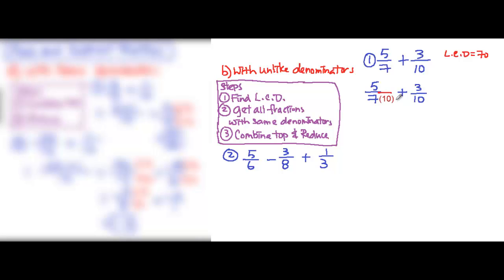We cannot suddenly multiply something at the bottom. We need to do the same on top, and it will make that okay if we reduce 10 with 10. Then this will be gone and you still have 5/7. So we're not changing the value of the first fraction.